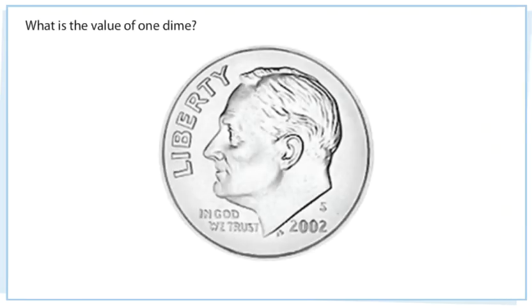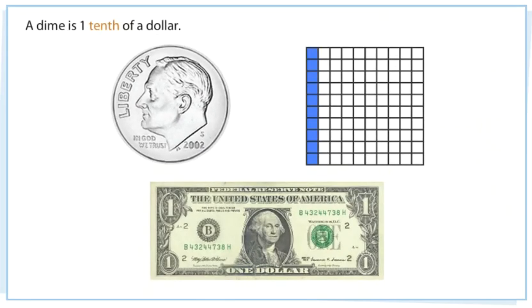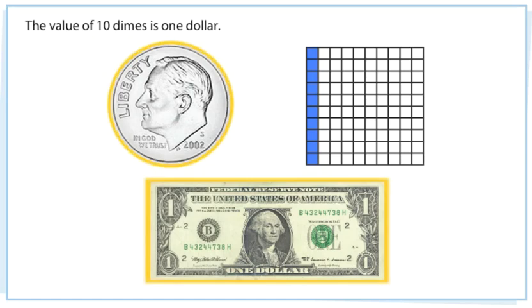What is the value of one dime? A dime is one-tenth of a dollar. The value of ten dimes is one dollar.